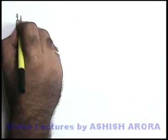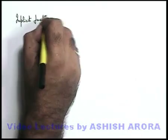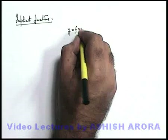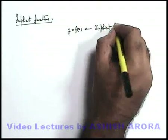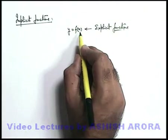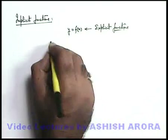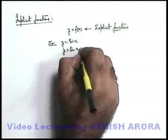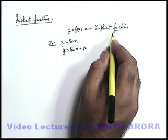Let's discuss another category of functions — these are implicit functions. Till now what we have studied, the normal functions like y is equal to f of x, these functions we call explicit functions. Value of y is explicitly defined in terms of x. Explicit means if we put the value of x we get a particular value of y, like y is given as sine x, or y is given as ten x plus root x. These all functions are called explicit functions.